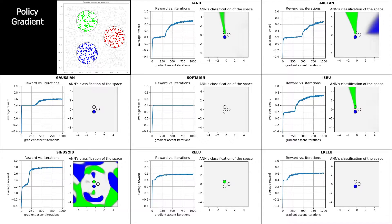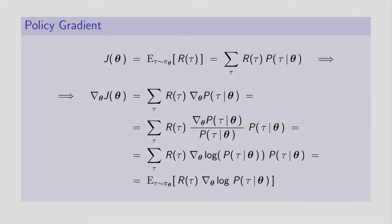Let me interrupt here for a minute. You have probably noticed the poor performance when training with policy gradient. To answer why this is happening, let's recall how we compute the policy gradient: we approximate the gradient using a sample of trajectories generated with the policy itself. What is happening is that the policy reaches a point where some trajectories are so unlikely that they are rarely sampled, reducing exploration and leading to the slow and underperforming training we just saw.